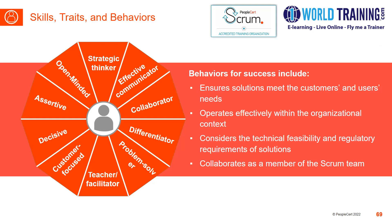The next important trait is being an effective communicator. The product owner should be able to communicate with different stakeholders, customers, and the scrum team using the most appropriate methods and style. He should be a great storyteller — through effective communication skills, he should be able to sell the product to all stakeholders. Additionally, the product owner should effectively collaborate with scrum team members, customers, and other stakeholders to achieve common objectives.